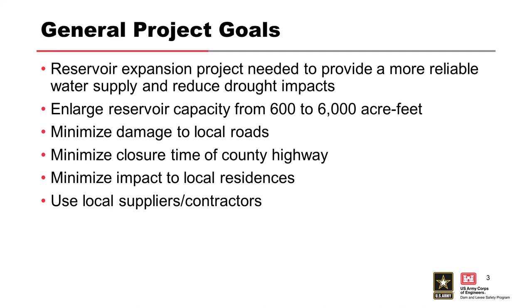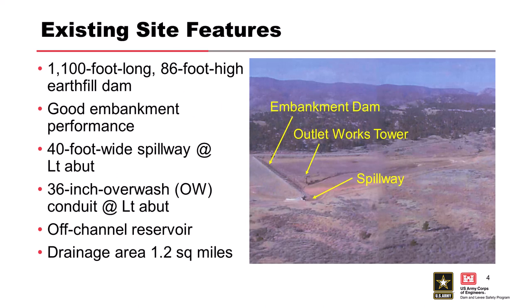The existing dam was approximately 1,100 feet long and 86 feet high, with a spillway and outlet on the left abutment. It had a very small drainage area of 1.2 square miles and was an off-channel reservoir. Here's a photo before construction.